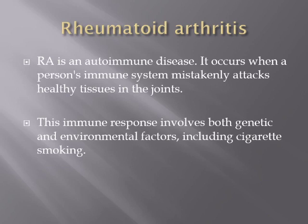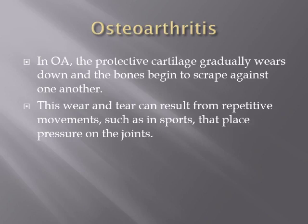Rheumatoid arthritis is an autoimmune disease where the immune system mistakenly attacks healthy joint tissues using autoantibodies formed by the body itself. This immune response involves both genetic and environmental factors, including cigarette smoking. In osteoarthritis, the protective cartilage gradually wears down and the bones begin to rub against one another, exposing the bone surfaces to each other.